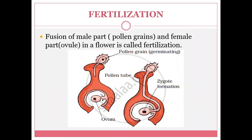So what is fertilization? Fusion of the male part, that is pollen grains, and the female part, that is ovule, in a flower is called fertilization. As you can see here clearly, when the pollen grain has fallen on the stigma it produces a pollen tube. Through the pollen tube the male gamete reaches the ovule and thus zygote formation takes place.